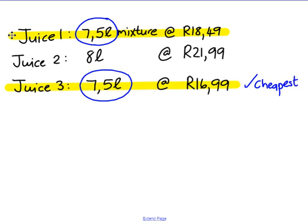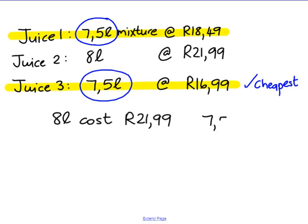Now we have to compare juice two to juice three. Juice two: eight liters cost $21.99. Juice three: 7.5 liters cost $16.99. So which is going to be the cheapest?